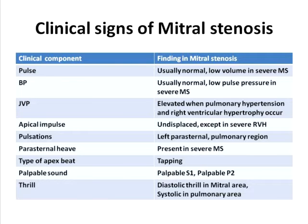Pulsations can be seen in the left parasternal region, especially in the lower parasternal region, when there is right ventricular hypertrophy. Pulsation can also be seen in the pulmonary area, which is the left second intercostal space close to the sternum, as a consequence of pulmonary hypertension. Parasternal heave — the visible lift of the left parasternal region — can happen in severe mitral stenosis as a consequence of right ventricular hypertrophy along with a big left atrium.